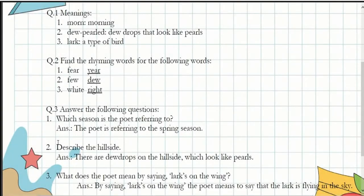Dear students, in this video I will be explaining the exercises. First of all, I have already explained the meanings in the poem itself. Morn means morning. Dew pearl means the dew drops that look like pearls, and pearl is a moti. Lark is a type of bird which I already showed you.